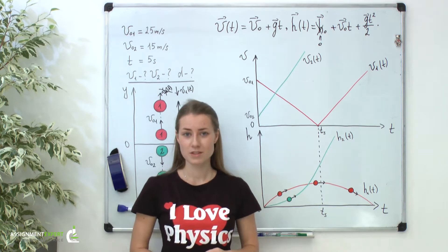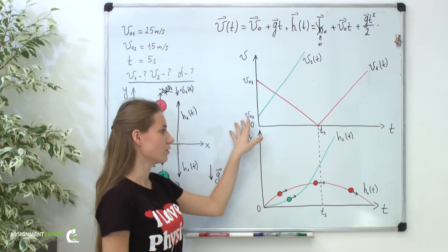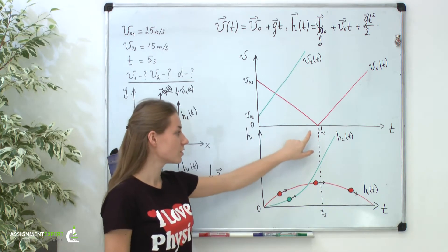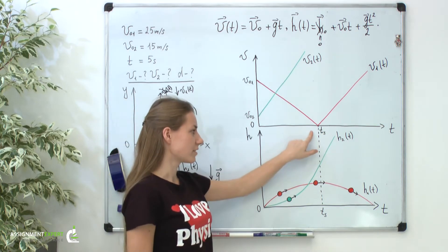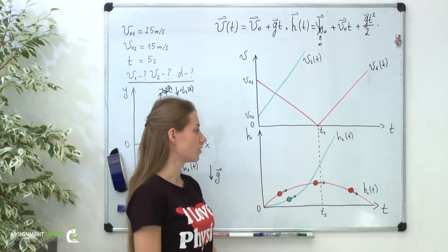Before the start, let me remind you that points on our v-axis are our initial velocities. Then the point of intersection with the t-axis means that at this point our object has zero velocity or simply stops.